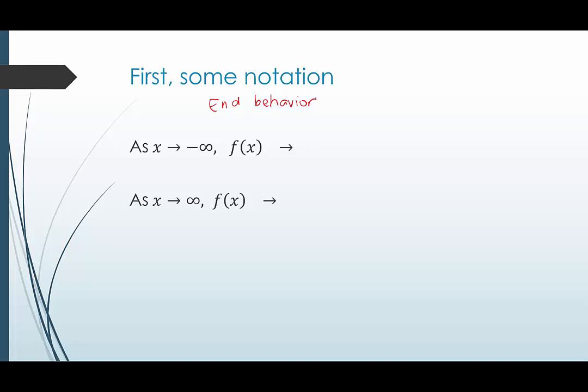What's happening as x gets smaller and smaller? What's happening as x is getting bigger and bigger? This reads: as x approaches negative infinity — meaning as x gets smaller and smaller, like negative 10, negative 100, negative 10,000, negative 10 million — what is the dependent variable, f of x or y, doing? And this means as x is getting bigger and bigger without bound, what is the end behavior doing? For polynomial functions, the end behavior will do one of two things.